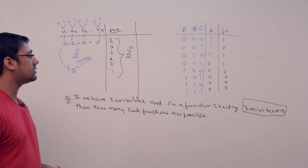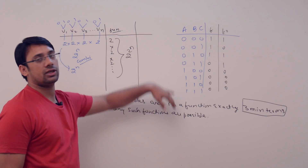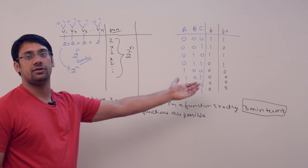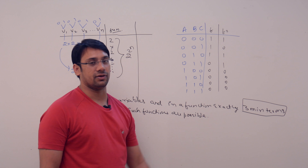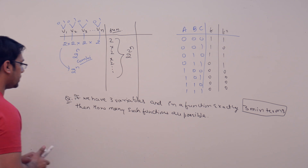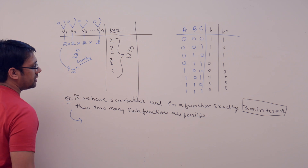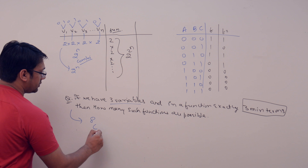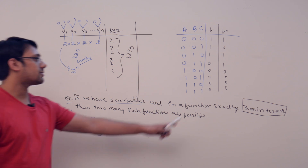For this question, we can clearly see it is a problem of choices. If we have eight locations and we want to make three of them equal to one, then how many such different combinations are available? The answer is 8C3, so 8C3 combinations are possible.